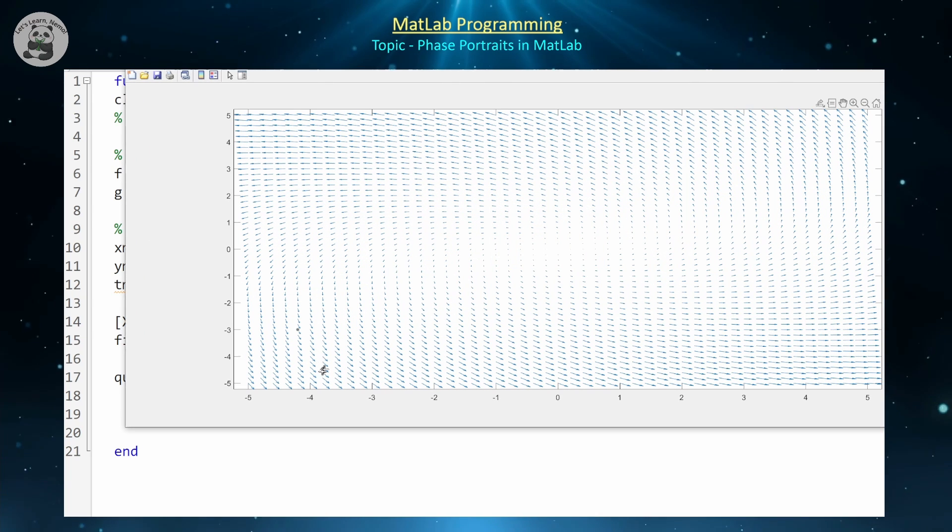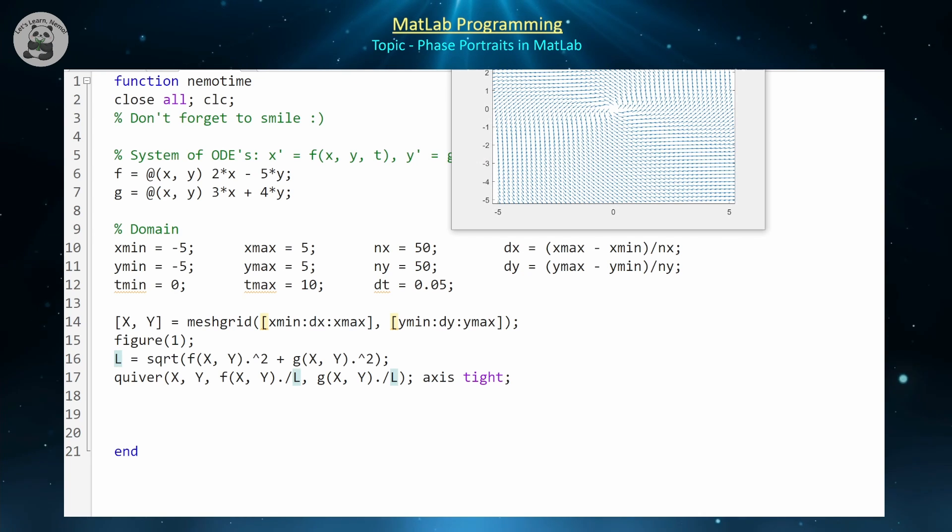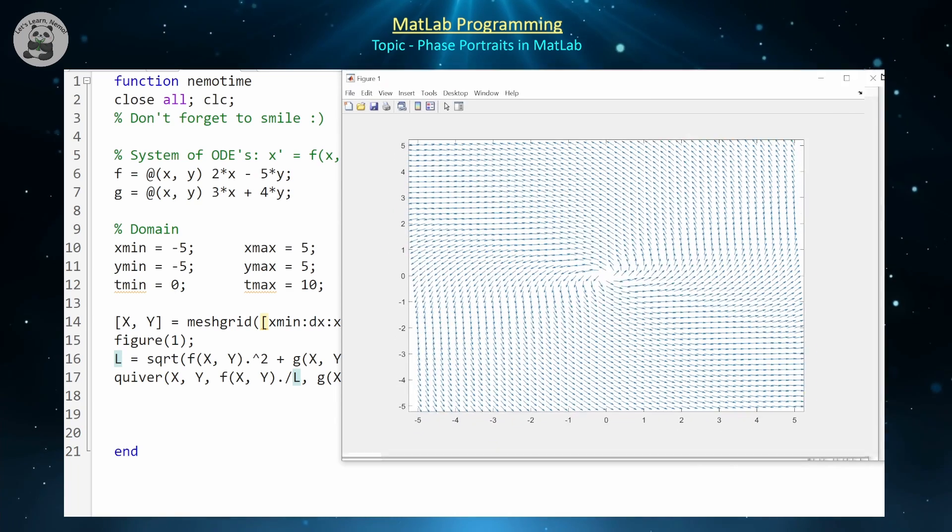The next issue is that all these vectors are of different sizes. So one thing we could do is just make all of them unit vectors. The easiest way we can make them unit vectors is to compute the magnitude of each of them. So L is going to be equal to the square root of f(x,y) squared plus g(x,y) squared. Then I'm going to divide f and g by our magnitudes, and that's going to make them all unit vectors.